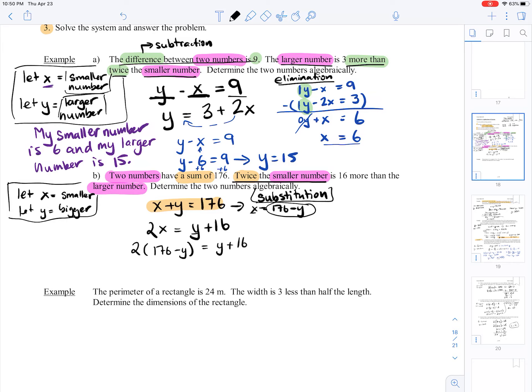Now I want to isolate for y, so I'm going to first, following BEDMAS, multiply into my brackets. So 2 times 176 is 352 minus 2y equals y plus 16. I want to isolate y, so I'm going to bring my y's to the same side. So this becomes 352 equals 3y plus 16. It's 3y because I added 2y to both sides to cancel this out.